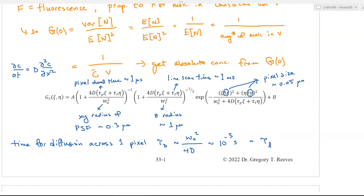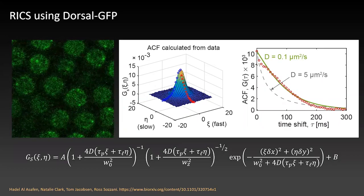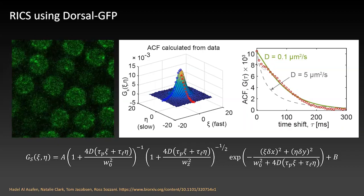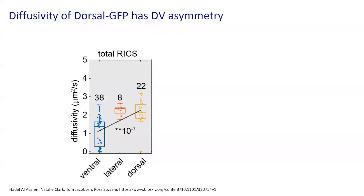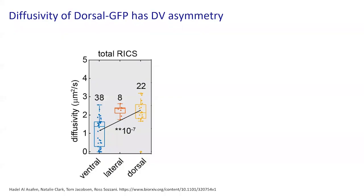We can take our data and fit our model to it, getting a decent fit though with some systematic deviations. We've measured the diffusivity of dorsal GFP in different parts of the embryo. On the ventral side we get a diffusivity ranging from very small to around one. In the lateral parts of the embryo it's higher, and on the dorsal parts it may be still higher, though those two may not be statistically significantly different.